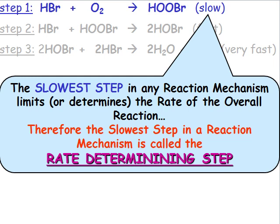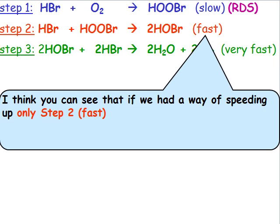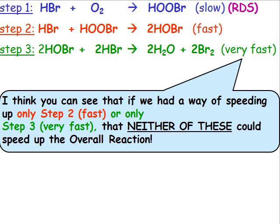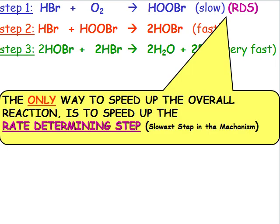Therefore, the slowest step in a reaction mechanism is called the rate determining step. I think you can see that if we had a way of speeding up only step 2, which is already fast, or only step 3, which is already very fast, that speeding up neither of these could speed up the overall reaction. Everything depends on the product from the slowest step. So the only way to speed up the overall reaction is to speed up the rate determining step, or the slowest step in a mechanism.